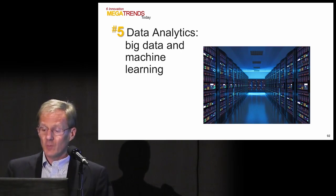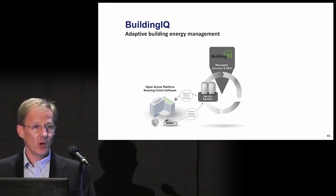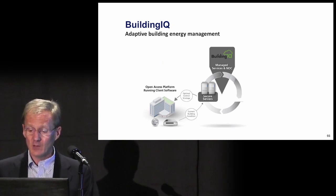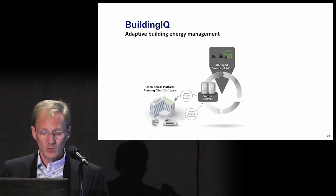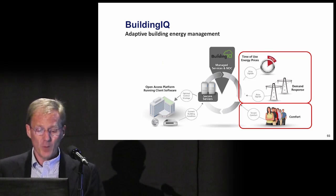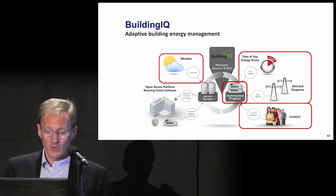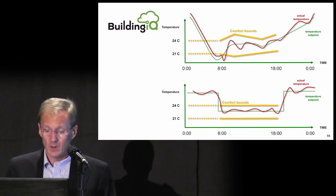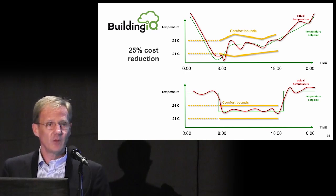Number five is data analytics — machine learning and big data are broad megatrends, and it's particularly interesting to see how they're being applied to control systems. Here's an example from a company in Australia called Building IQ. They're using MATLAB to develop adaptive heating and cooling systems for office buildings. They factor in the comfort of occupants, time-of-use energy prices and demand response, and the weather. They run an optimization program in the cloud to perform all this control. They've moved from the old way where a set point is changed twice per day to the new way using all of that controls, with an adaptive set point. This has achieved a 25% reduction in cost — a small startup company putting software into things and figuring out how to do it.